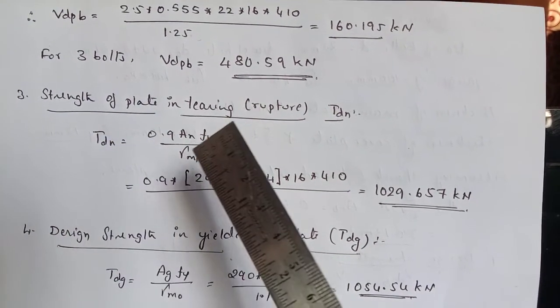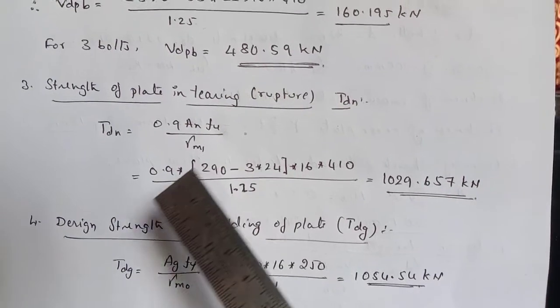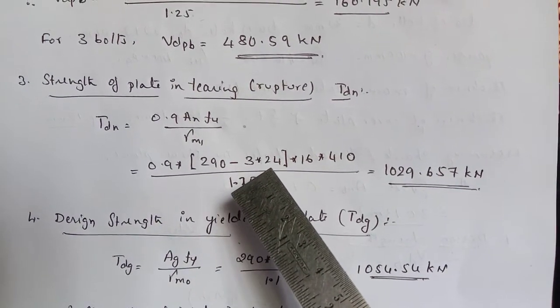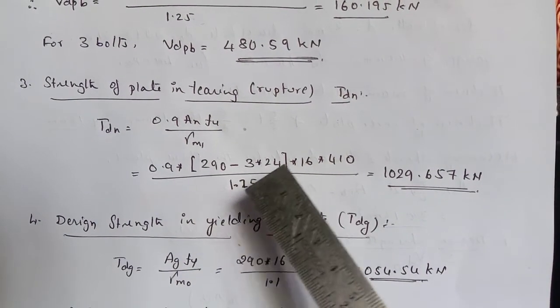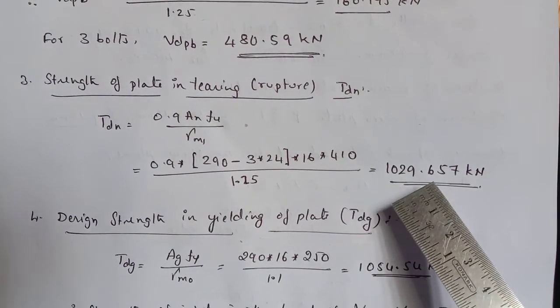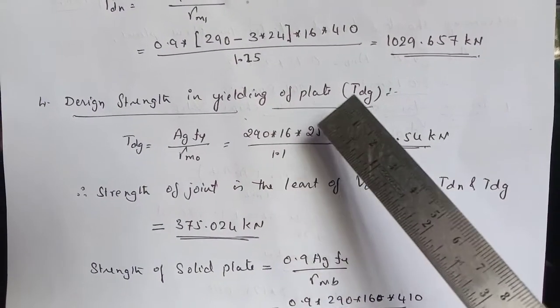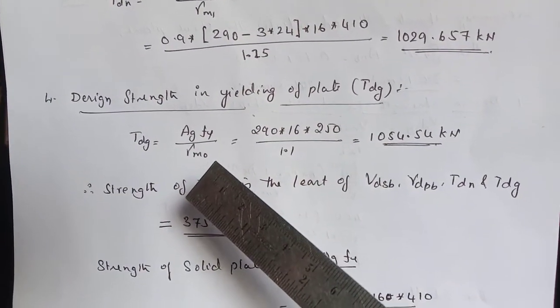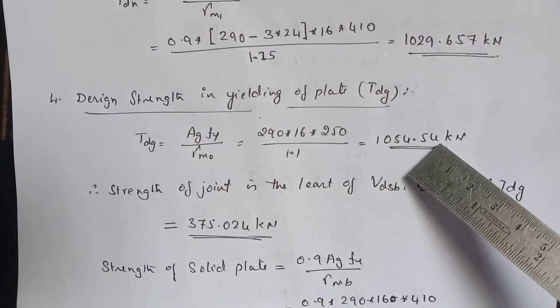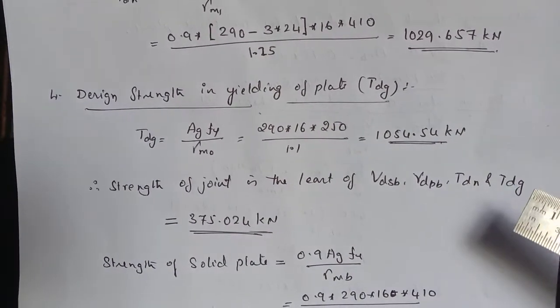Now let us compute VDPB. The design strength of bolt in bearing works out to be 160.195 KN. Therefore for 3 bolt the value is 480.59 KN. We are with the two values now, two more values to be found. First value, the third value is strength of plate in tearing or rupture TDN equal to 0.9 AN into FU divided by gamma M1. So it is 0.9 into 290 minus 3 into 24 that is 3 into D0. This is B, B minus 3 D0 into 16 into 410 divided by 1.25 works out to be 1029.657 KN. Then design strength in yielding of the plate TDG is equal to AGFY divided by gamma M1 similar to the previous problem works out to be 1054.54 KN.